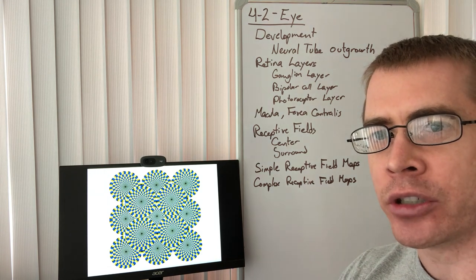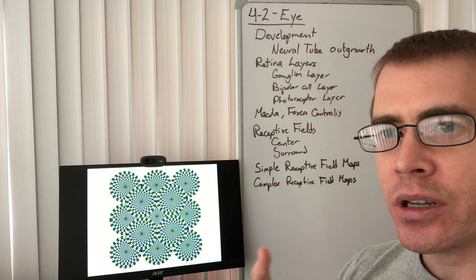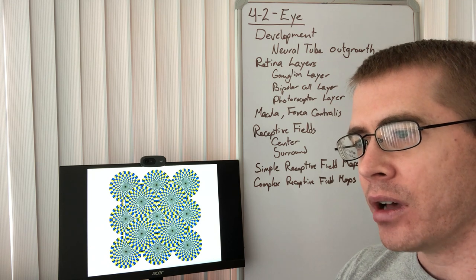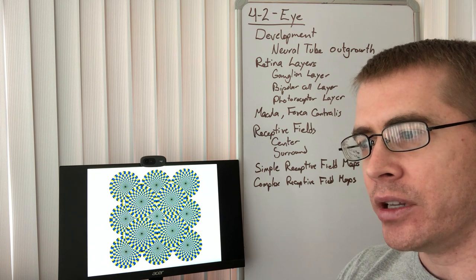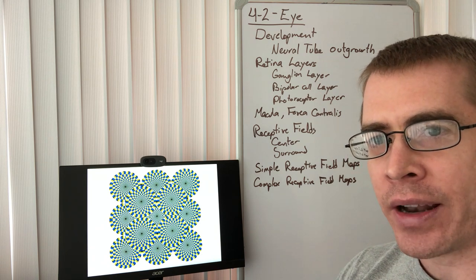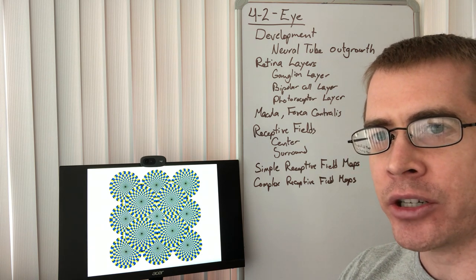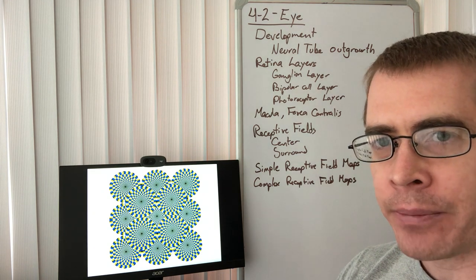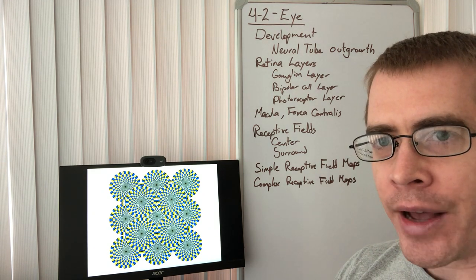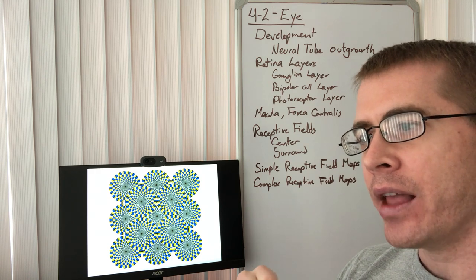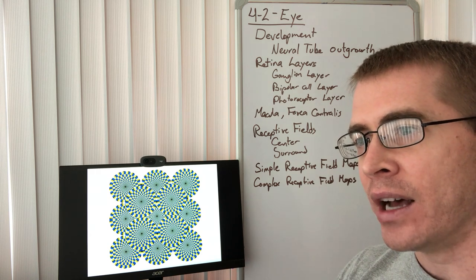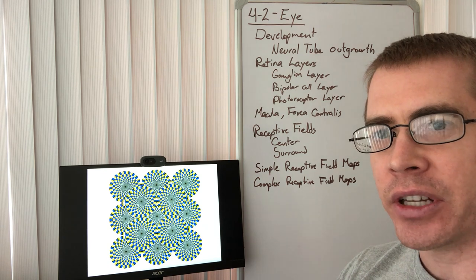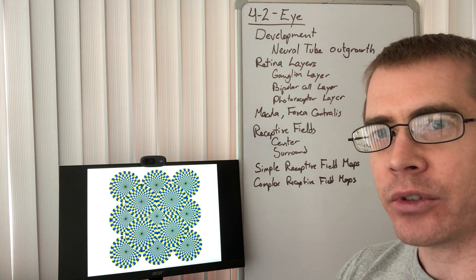These are just a couple of interesting visual illusions that give you some information about how the retina is processing information. In the next lecture, we'll talk about the optic nerve pathway and how this information travels to the LGN — the lateral geniculate nucleus — and the clinical consequences of this pathway. Stay tuned for that, see you next time.